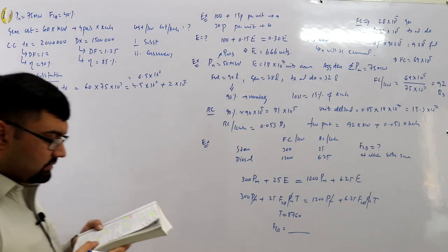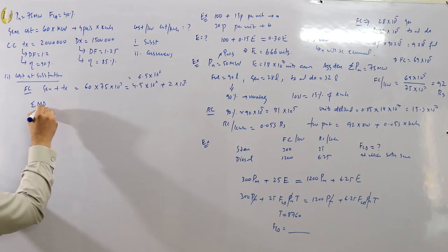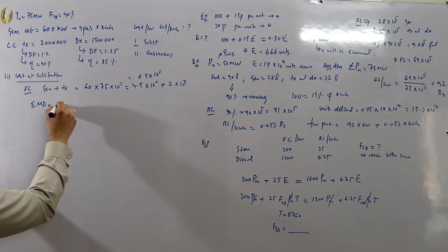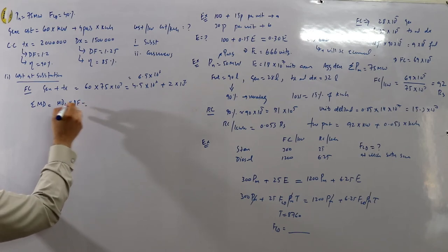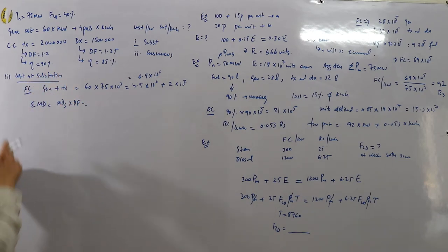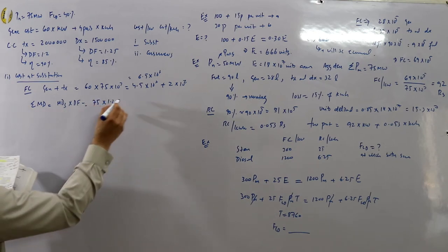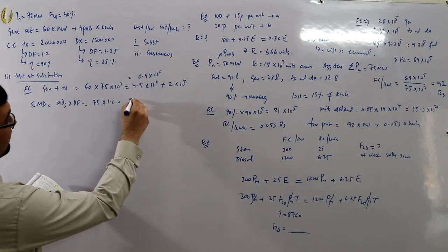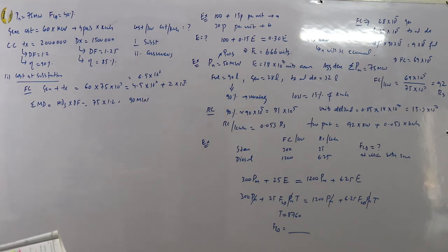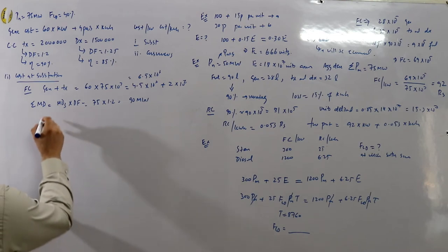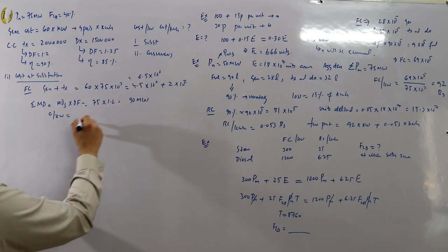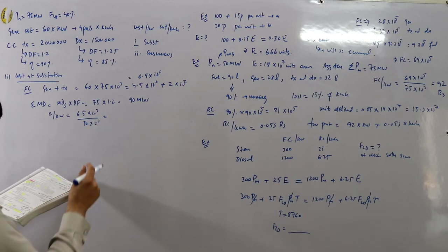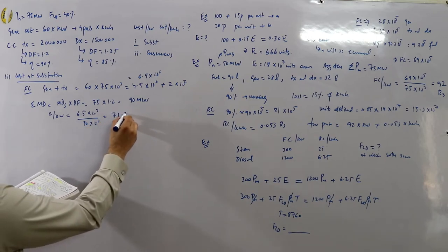Aggregate maximum demand at substation = maximum demand × diversity factor = 75 × 1.2 = 90 megawatts. Cost per kilowatt = 6.5 × 10⁶ / 90 × 10³ = rupees 72.22 per kilowatt at the substation.